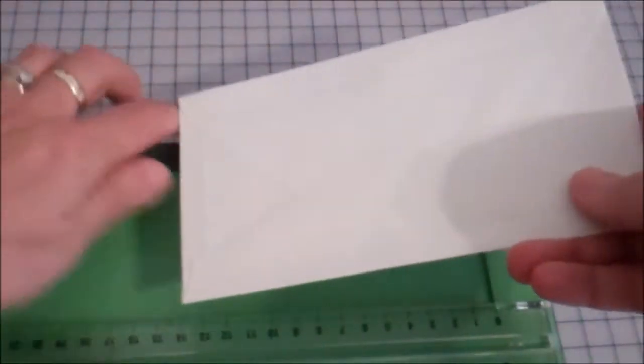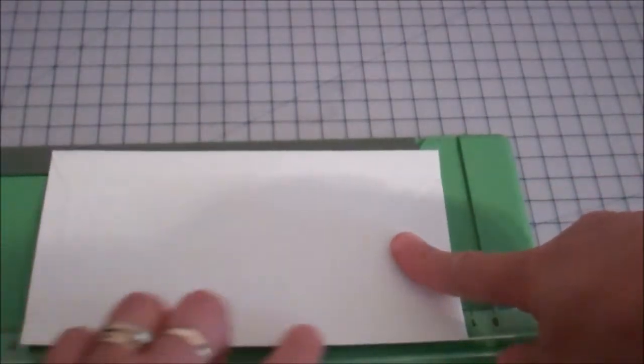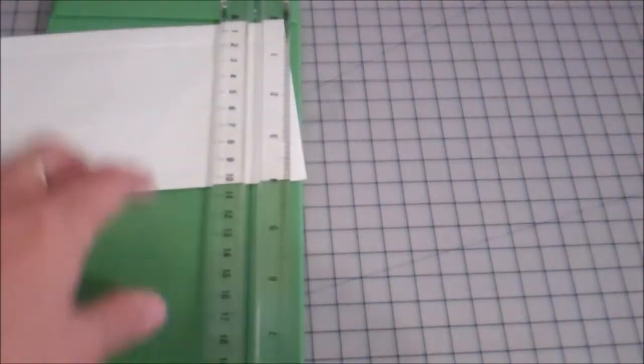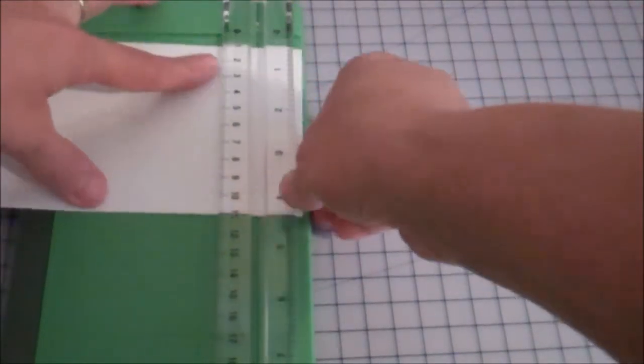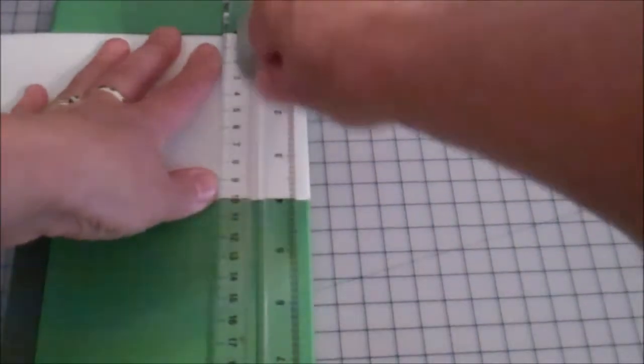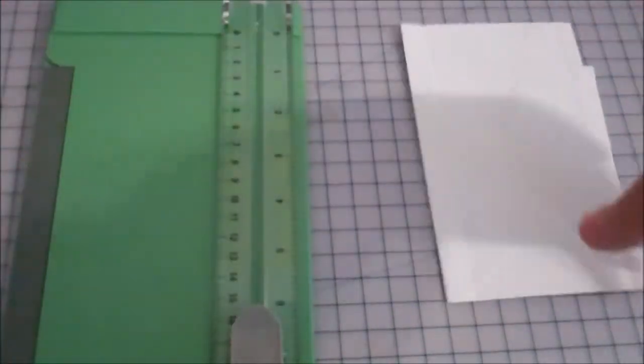So now I'm going to cut off the part that you didn't score. So I have some score lines here and here and here. I'm going to cut off the top. And it really doesn't matter how much you cut off, it just depends on however big you want your bag to be. So I just cut off about an inch.